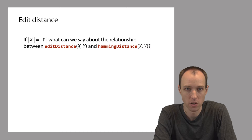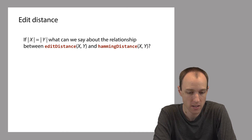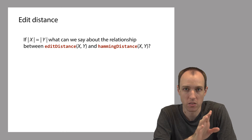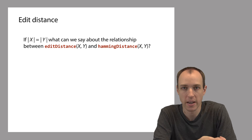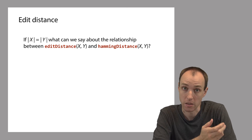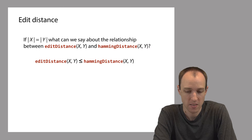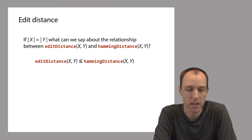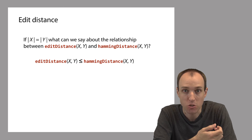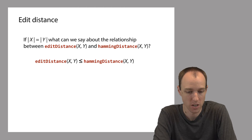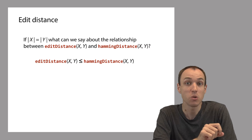Say we have two same-length strings x and y and we'd like to say something about the relationship between the Hamming distance and the edit distance of those two strings. Are they equal, or is one greater than or equal to the other? The edit distance between x and y will always be less than or equal to the Hamming distance. If you allow only substitutions to turn x into y, you need a certain minimal number of changes. If you additionally allow insertions and deletions, you can potentially do it with fewer changes.